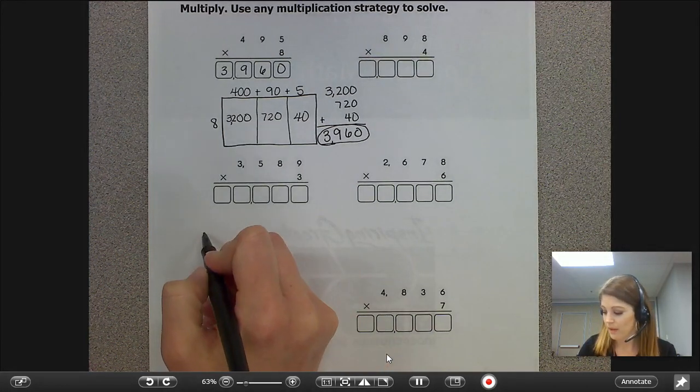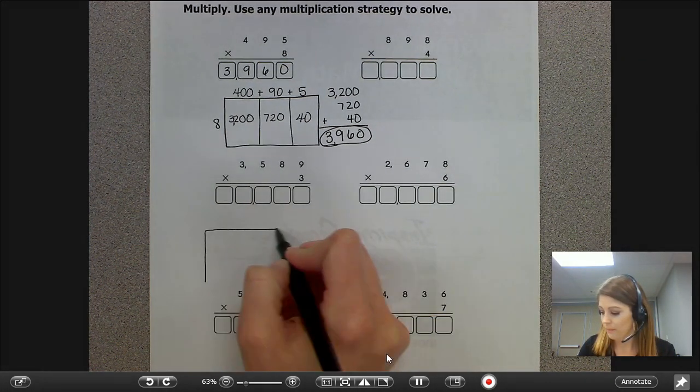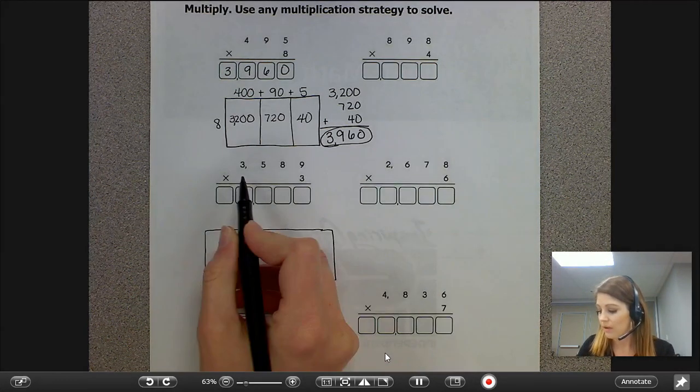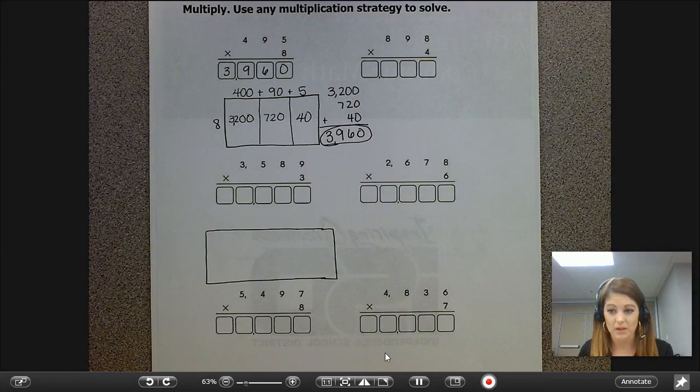When we start with area model we always draw our rectangle and after we've drawn our rectangle we look at our numbers and we break them down into place value.